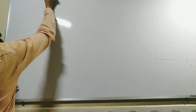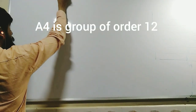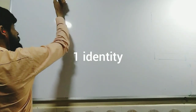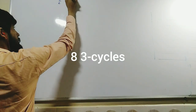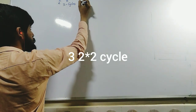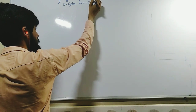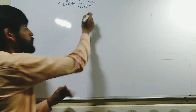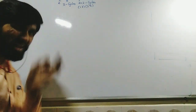We have already noted in the last video that A4 is a group of order 12. It contains all even permutations inside the group S4. How many elements does it have? 12 elements. Out of these 12 elements, there will be one identity element, there will be 8 three-cycles, and there will be 3 products of two transpositions — like (1 2)(3 4) and the other two. So in total, these are the 12 elements of A4.